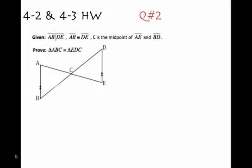For question number two on the homework, if you've gotten stuck on question number two, you are given that segment AB is parallel to segment DE. Segment AB is congruent to segment DE. And C is the midpoint of segment AE and segment BD.